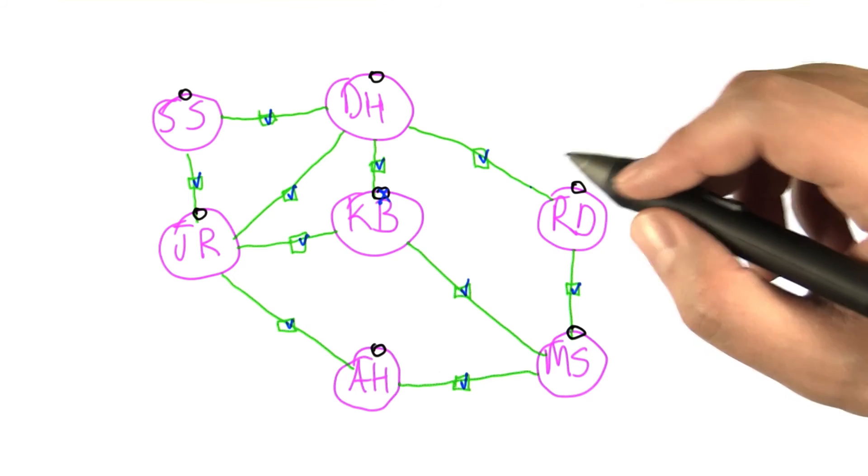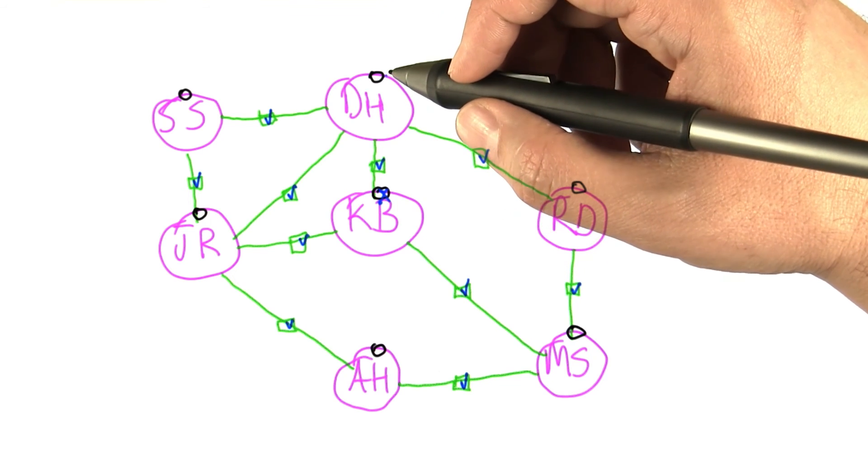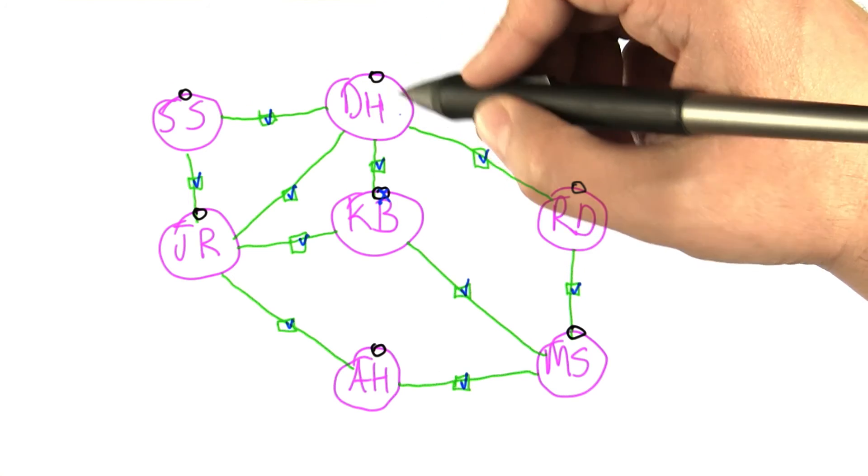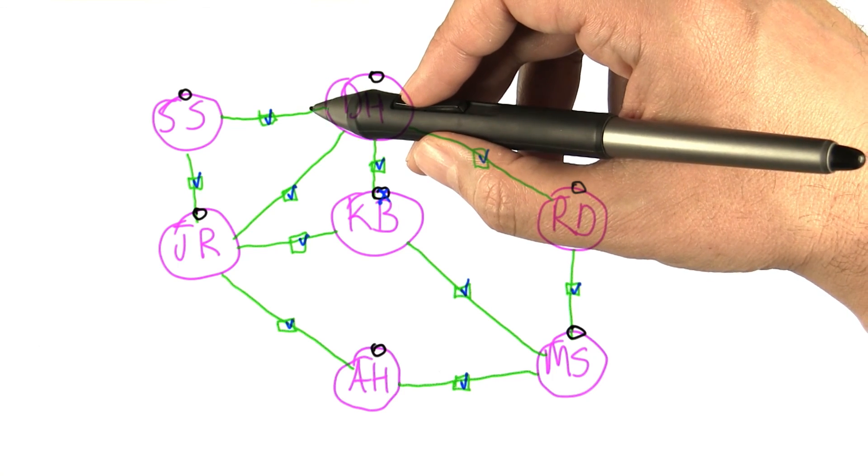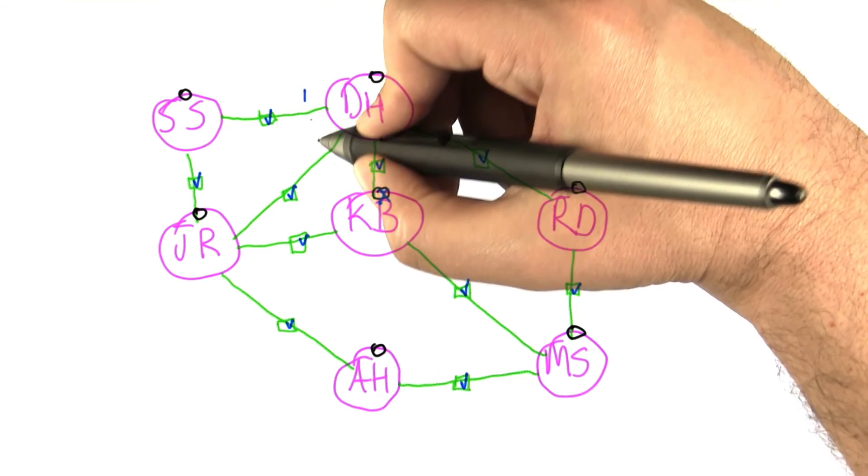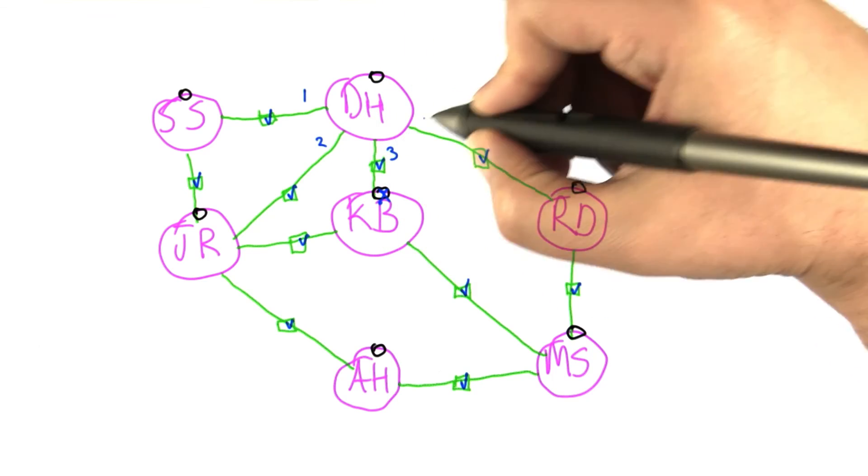We can also talk about the degree of a node in a network. For example, this Dustin Hoffman node here is a node in the network, and it's got degree 4 because there are 4 edges coming out of it. 1, 2, 3, 4.